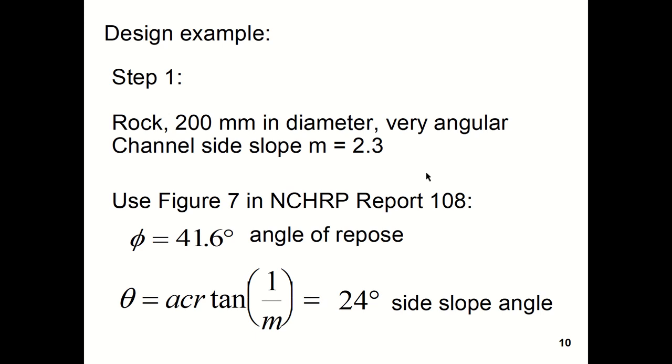So the rock with 200 millimeters in diameter, very angular, and we have a channel side slope of M equals 2.3. You'll notice that φ from figure 7 came out to be 41.6 degrees.